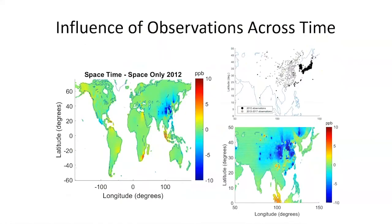We wanted to look at how observations were able to influence across time. In 2012, right before China data became available from 2013 to 2017, we ran BME two ways: a space-time method where observations influence across both space and time, and a space-only method. By subtracting the outputs, we can see that the space-time method provides a lot of correction over China even without many data points there in 2012 — showing that later China data from 2013 to 2017 was able to correct 2012 estimates.